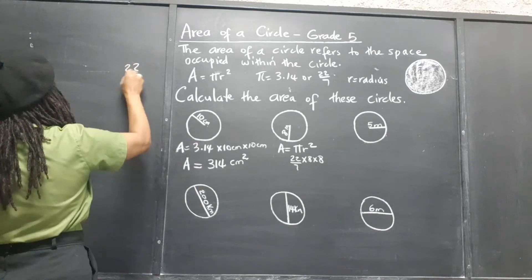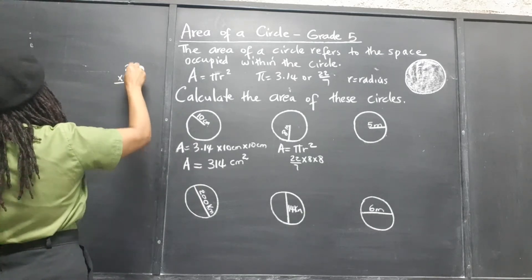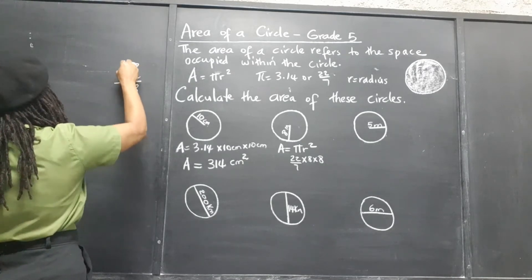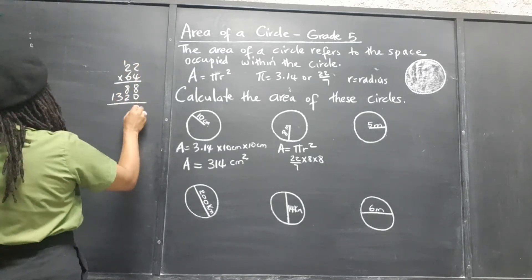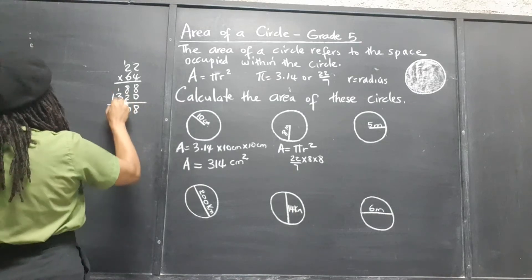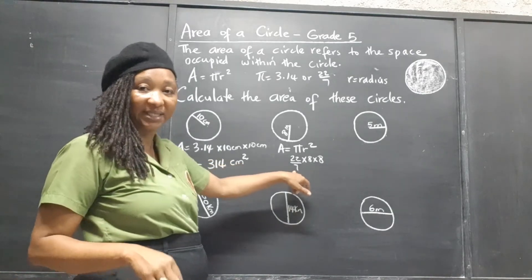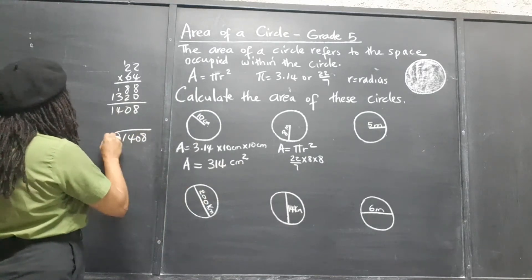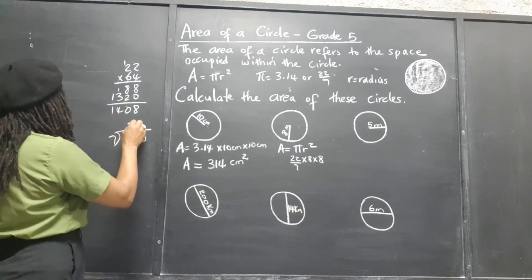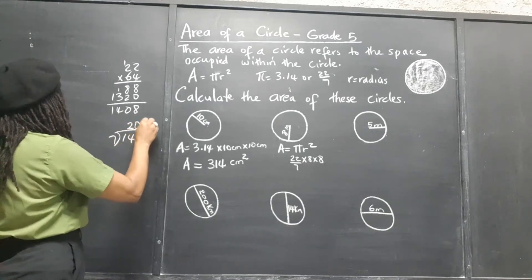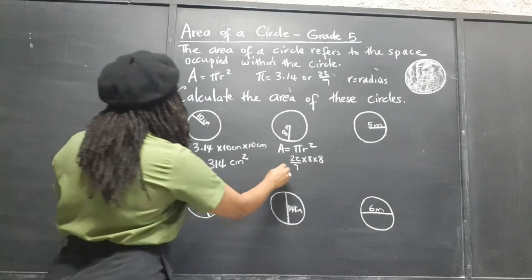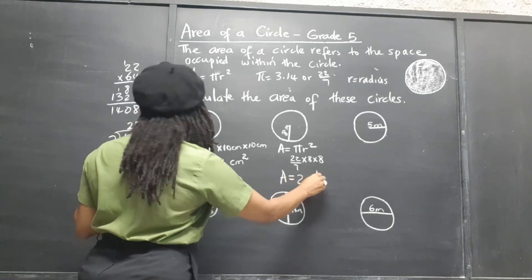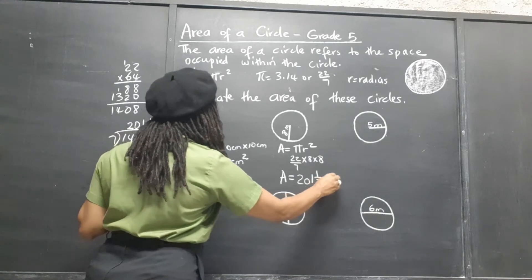So 22 times 64 gives us 1,408. Now we need to divide that by 7. 7 into 14 is 2 times; 7 into 0 is 0; 7 into 8 is 1 time. So the area of this circle is 201 and 1/7 meters squared.